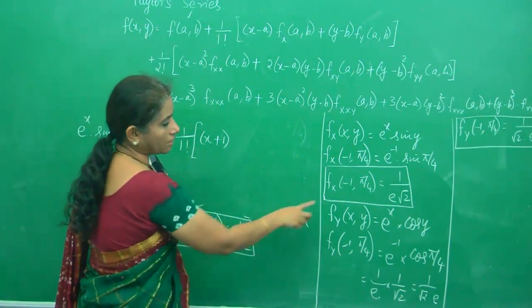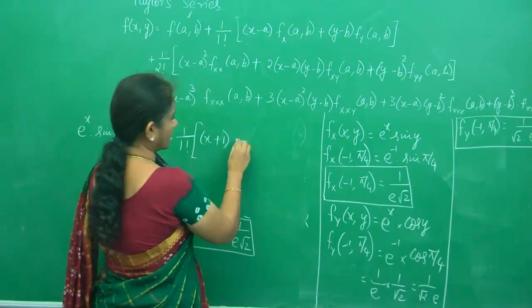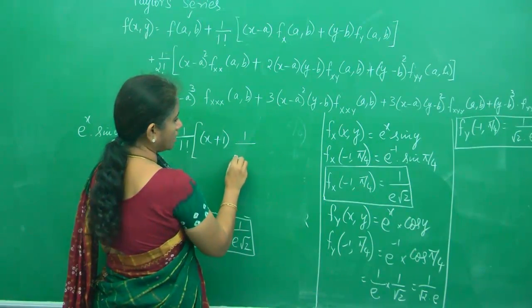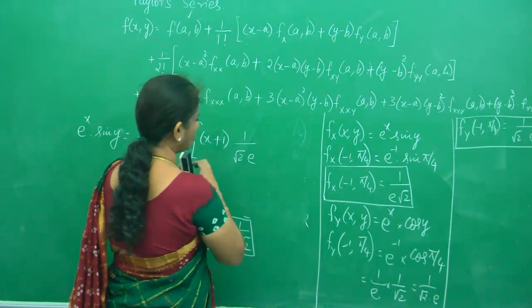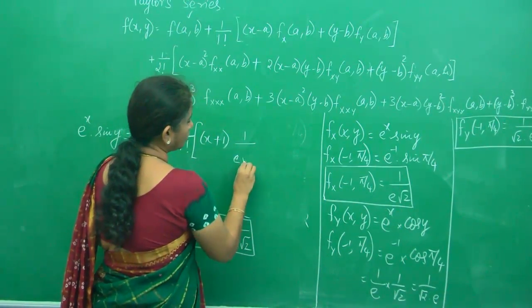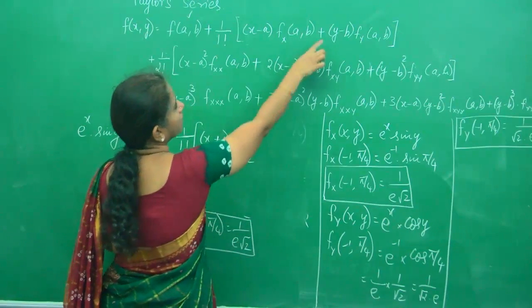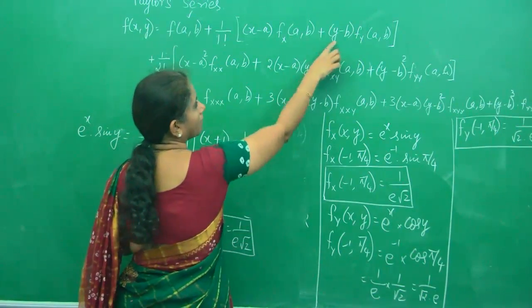So this is (x + 1) times f_x(a,b). What is f_x(a,b)? Again 1/(√2 · e). Then plus (y - b).